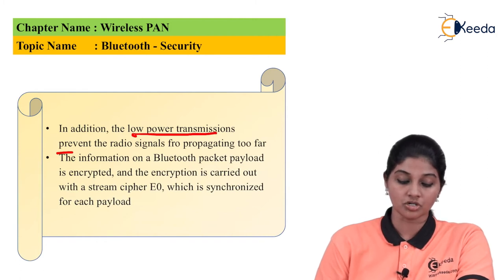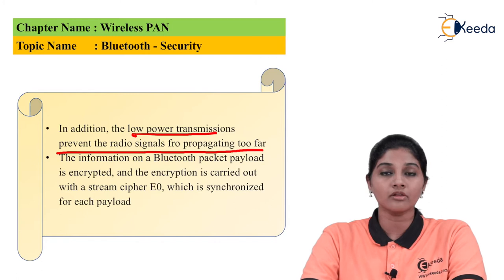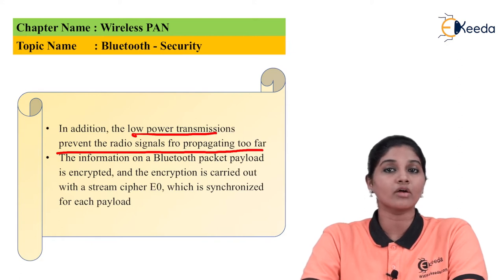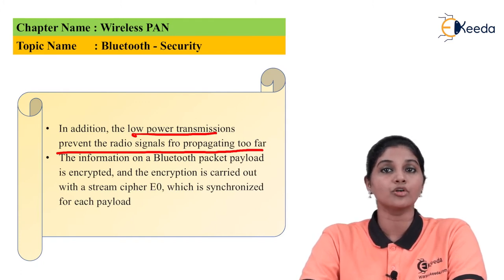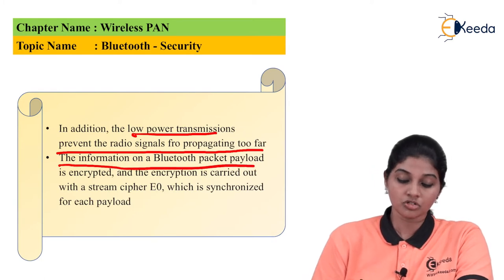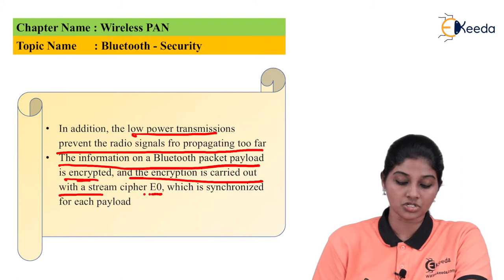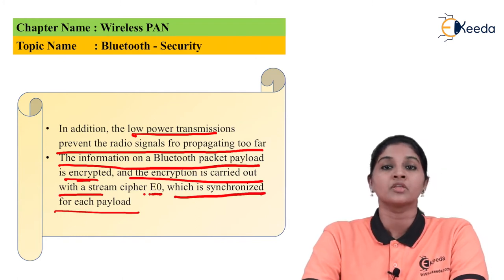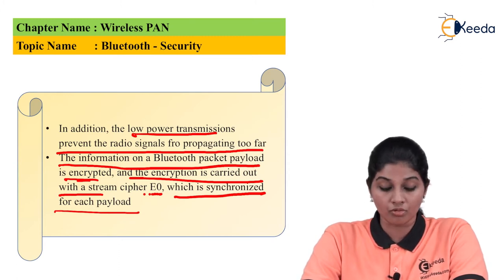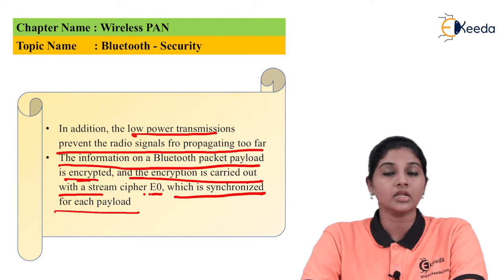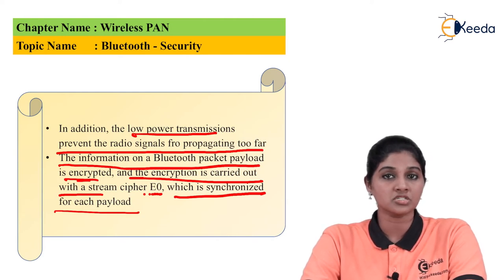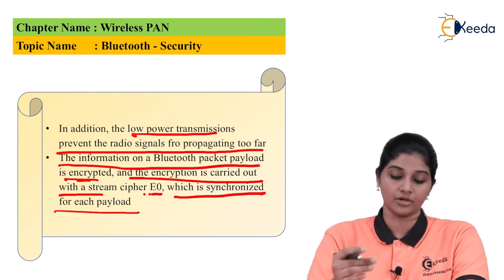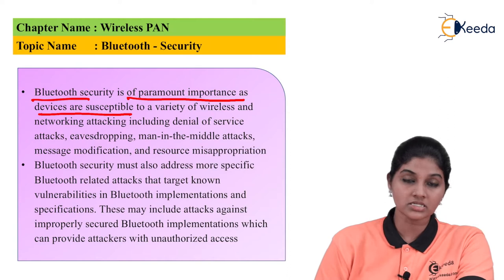In addition, low power transmission prevents the radio signal from propagating too far. Since the power of the signal is very less, the signal will not travel a longer distance. As Bluetooth is a short range network, the security offered must be very high. The information on the Bluetooth packet payload is encrypted using stream cipher E0, which is synchronized for the payload. At the receiver, decryption takes place using the same cipher so that data loss can be prevented.